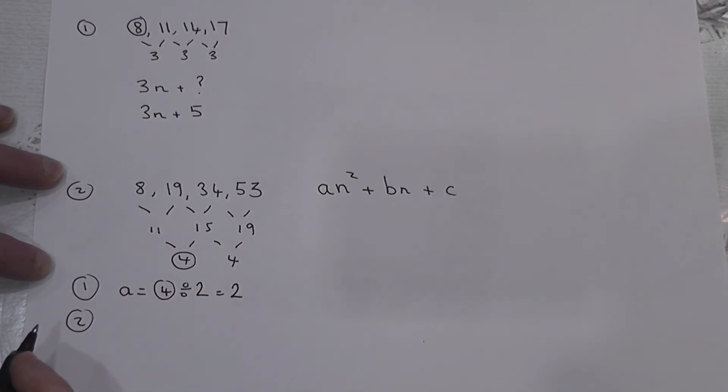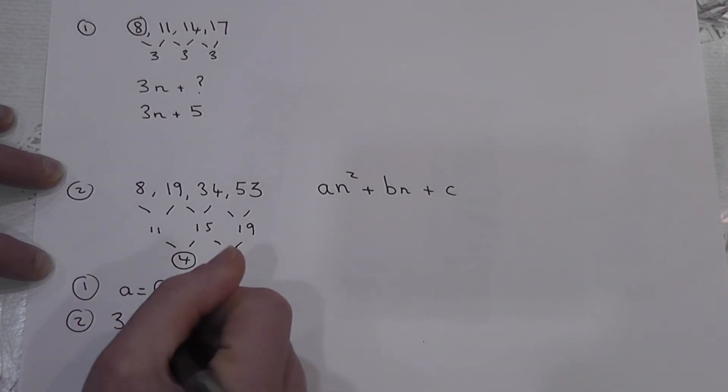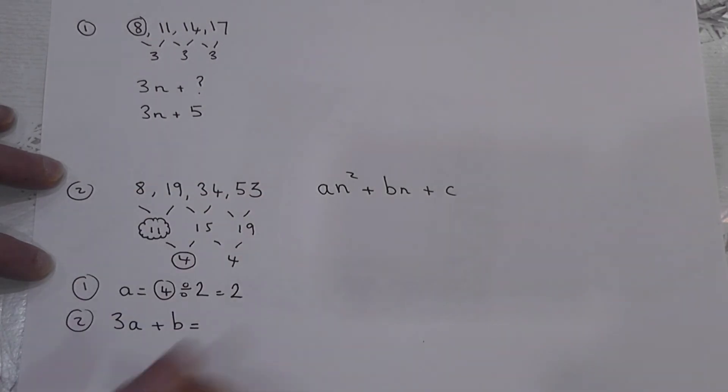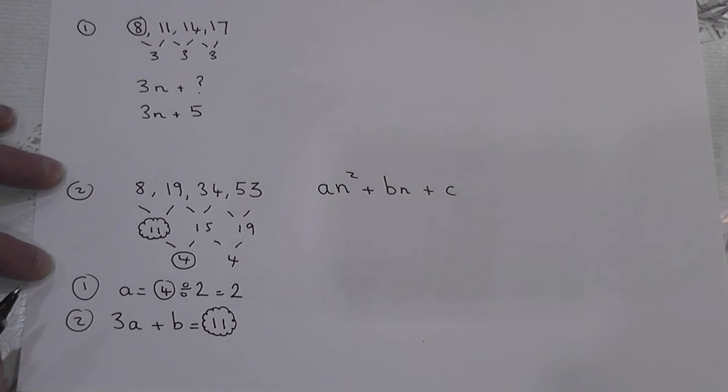The second one involves that first, first difference. And the second rule is always this: 3 lots of whatever a is plus b is always equal to this first difference here. Clearly that number can change. But in this case, it's 11. So we can now find b, because we know what a is. So it's always 3 times a. a is 2.